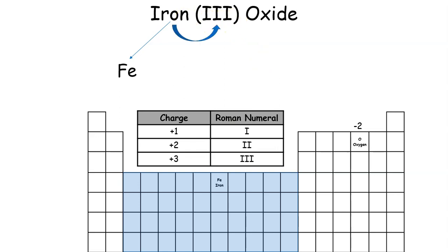The name. And we notice there is a Roman numeral 3 in front of iron. So we come down here and we see the Roman numeral 3 is a plus 3 charge.